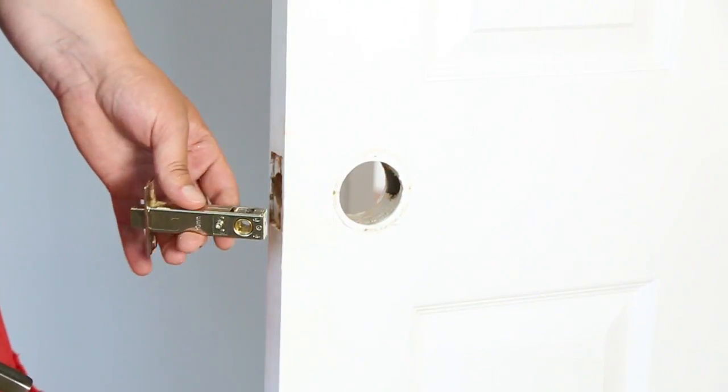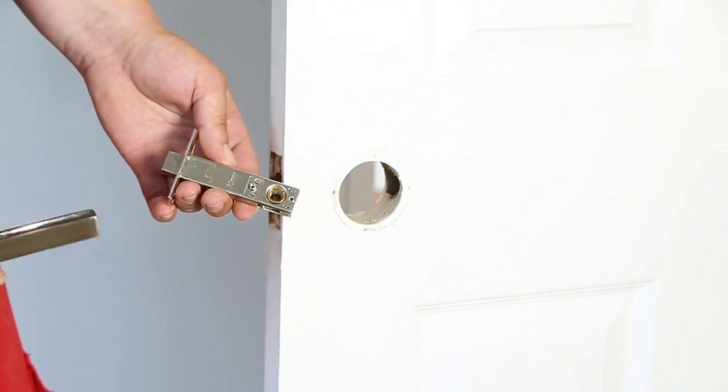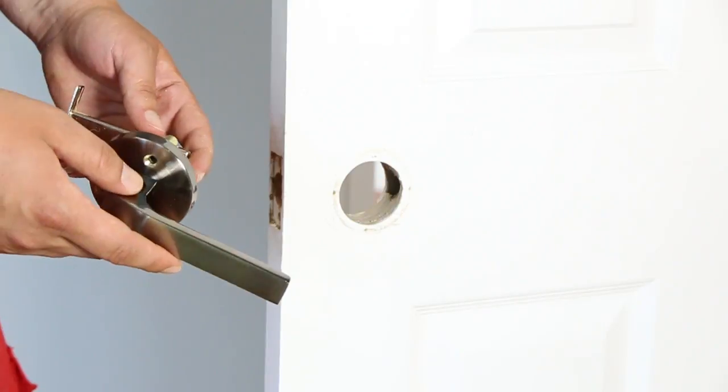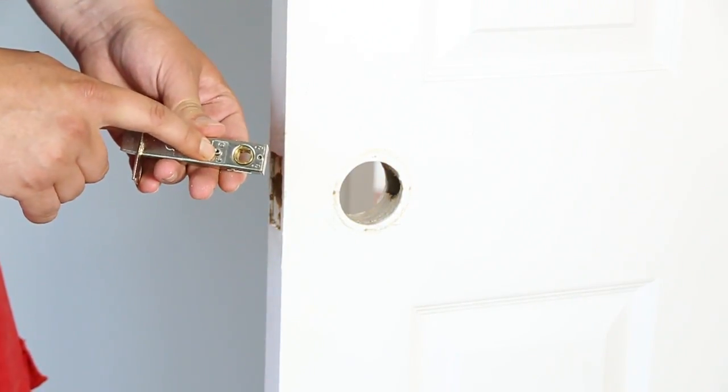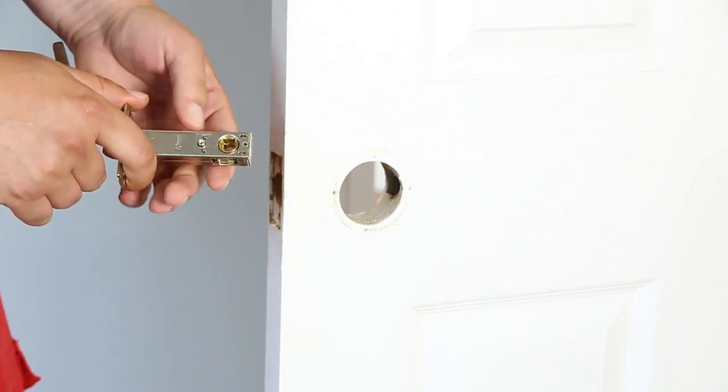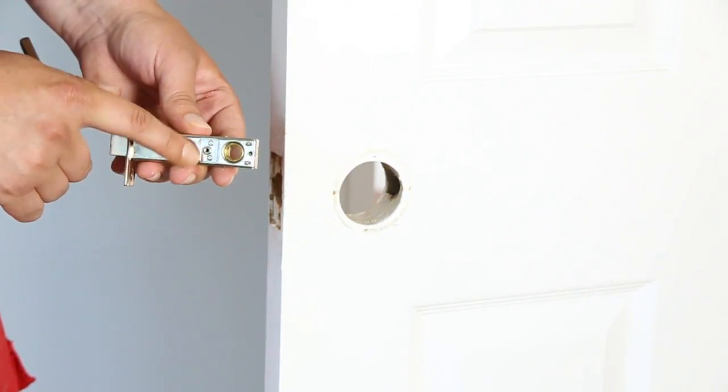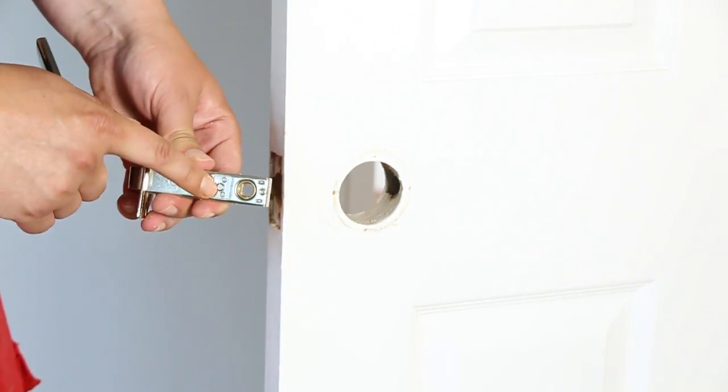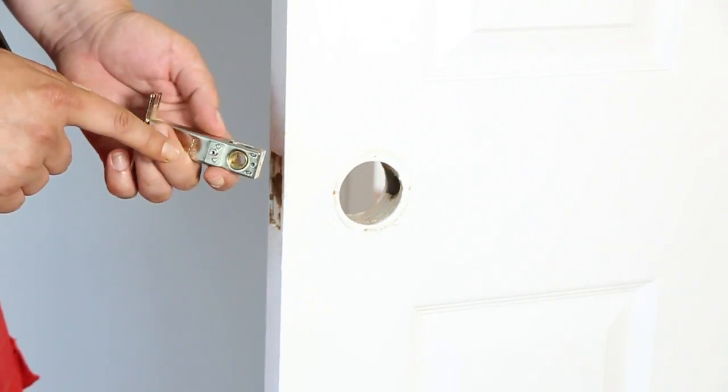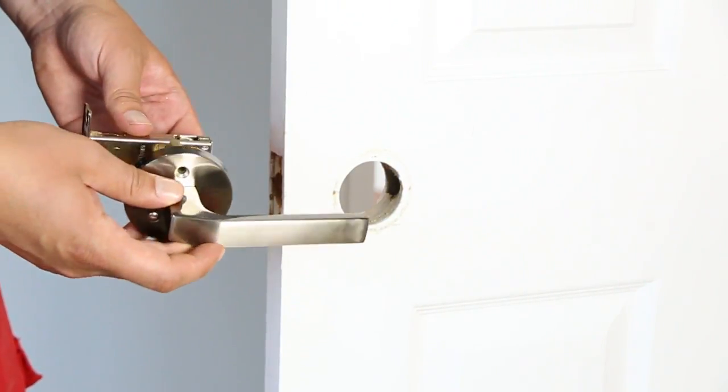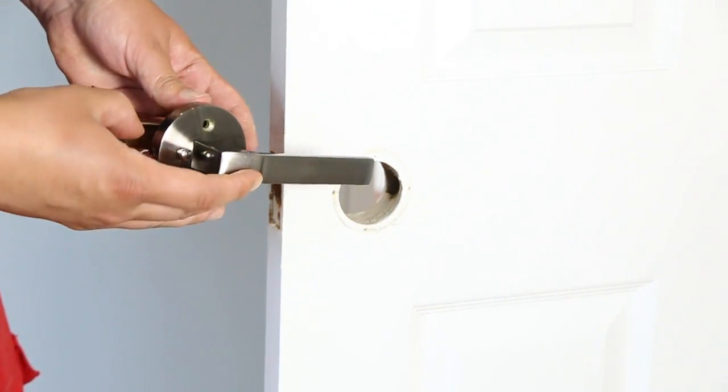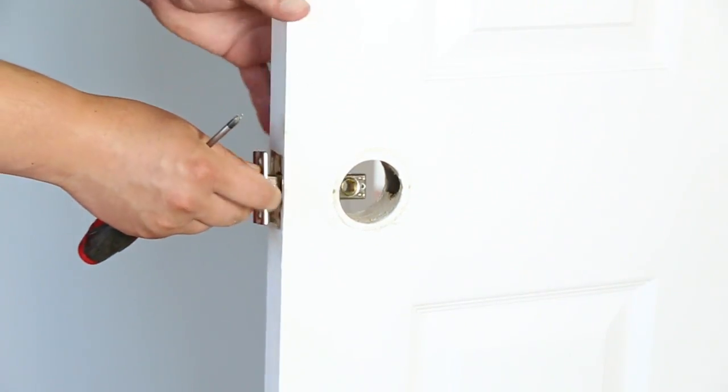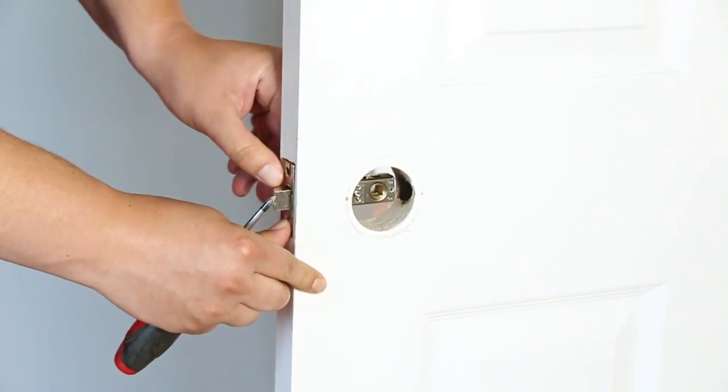Also another important thing when installing these handles, because this is a privacy, there is this little thing here on the actual latch. There's one side with the hole and the other one without the hole. So you just got to make sure that the side with the hole lines up with the side of the handle where it has this piece in order to lock the privacy.